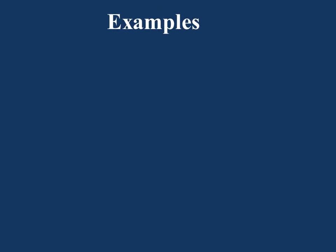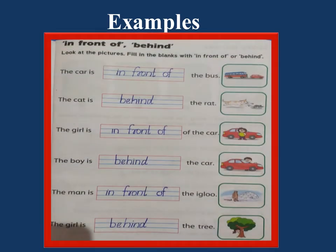Let us see some examples to understand clearly 'in front of' and 'behind'. You can see such a page in your textbook. See the first one: the car is blank the bus. You can see where the car is — the car is at the front of the bus. So we have to say the car is in front of the bus. The car's position is at the front of the bus, that is why we use the term 'in front of'. Second one: the cat is blank the rat. Where is the cat? Cat is at the back of the rat, so we will use 'behind'. The cat is behind the rat.